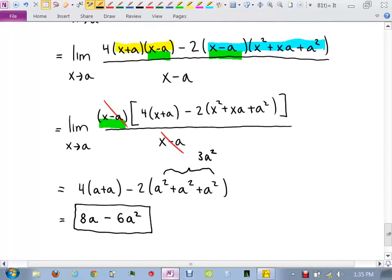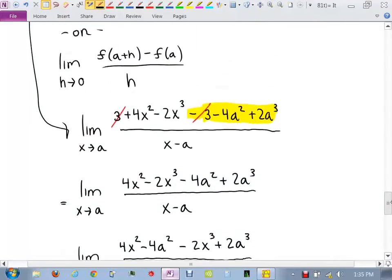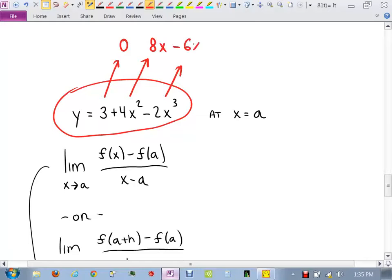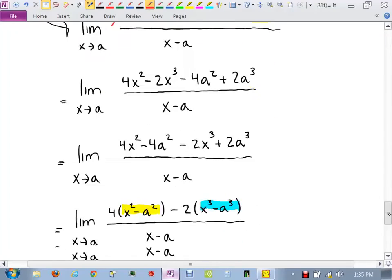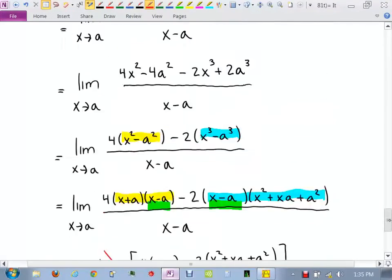Now, I think this problem helps illustrate the power of what we've done in section 2.3. If you take this problem in section 2.3 and say find its derivative, you don't have to use the limit anymore. The derivative of 3 is 0. The derivative of this is what? 8x. And derivative of this is negative 6x squared. Which is the same thing we just got. 8a minus 6, 8a minus 6a squared.